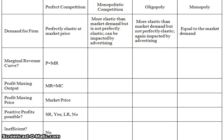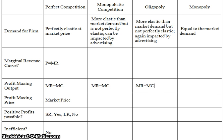We left off in the last video talking about the different shapes of the demand curves. Now we're going to talk about what that means for the marginal revenue curve, because every firm, no matter how it's structured, wants to set its profit-maximizing output where marginal revenue equals marginal cost. What's going to make the difference is how the marginal revenue curve is shaped.